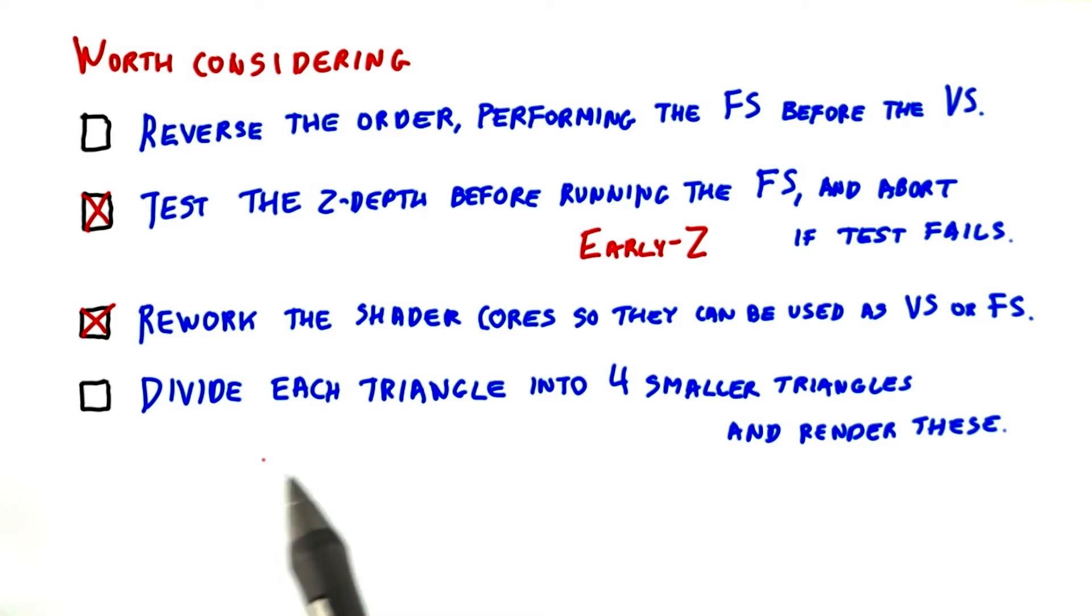The fourth solution doesn't change anything as far as the fragment shader goes. The same number of pixels will be covered and generate fragments, so the fragment shader still has to work as hard. Worse yet, adding more triangles means more strain on other parts of the pipeline, such as the vertex shader. So this idea causes more overall work, not less.